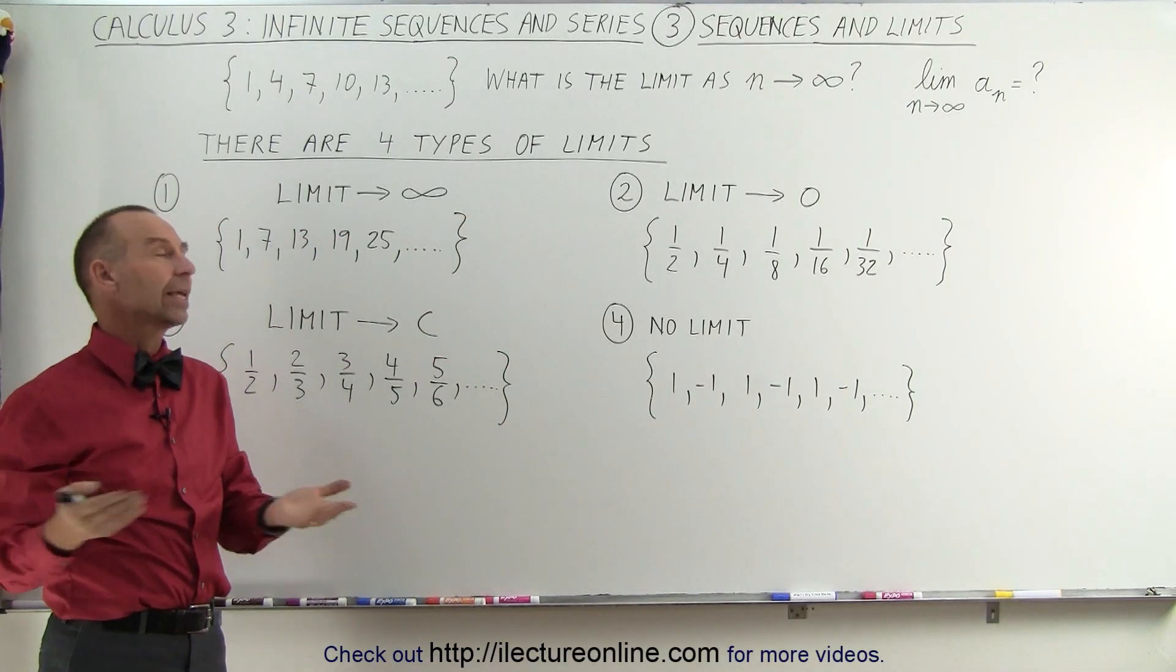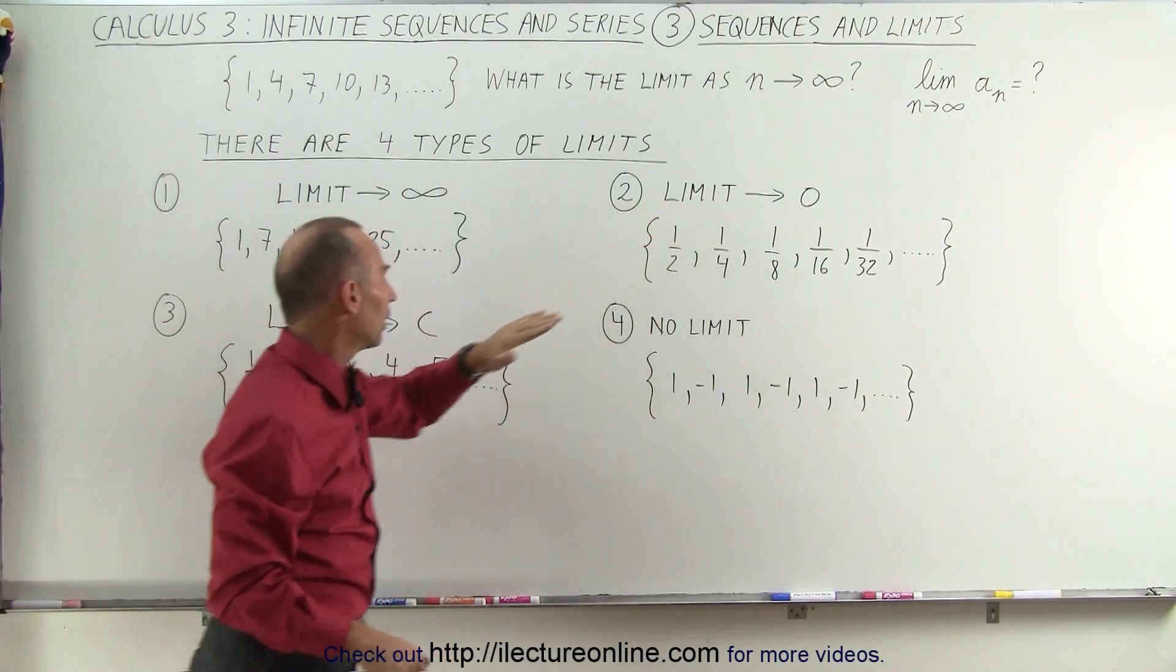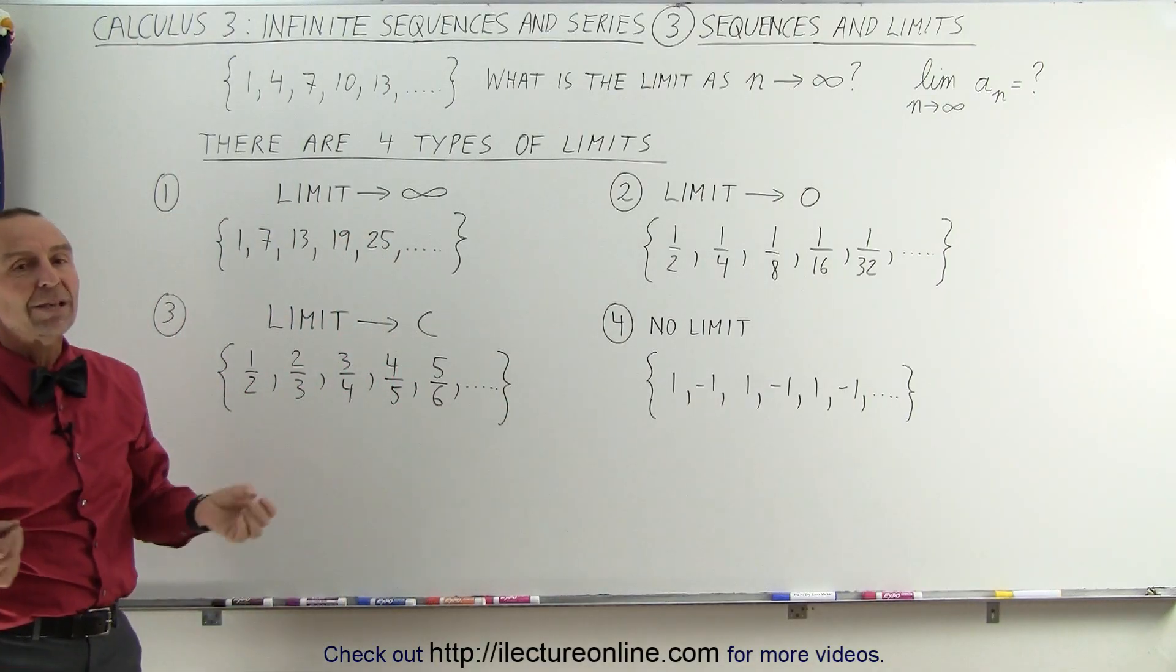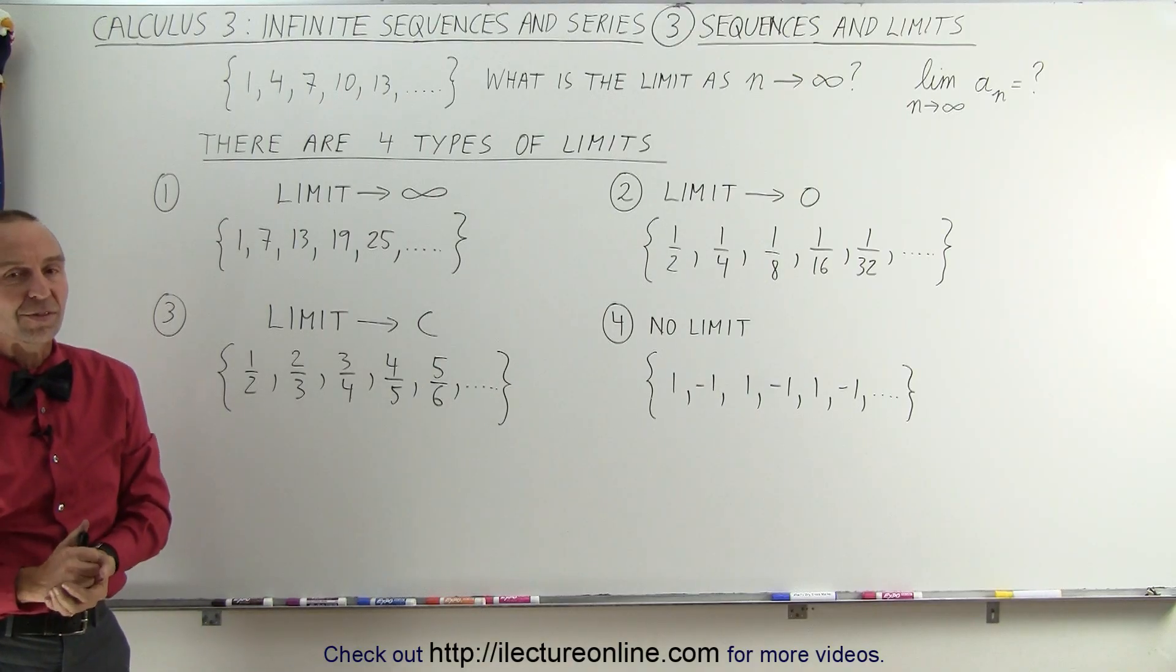So the four general cases you're going to encounter are: the limit is infinity, the limit is zero, the limit is some constant number, or there is no limit at all. And those are some of the basics as far as finding the limits of a sequence, and we'll see some examples of that as well.